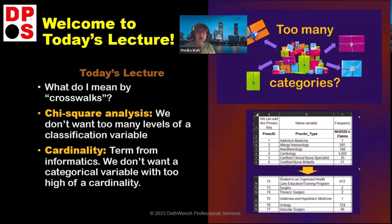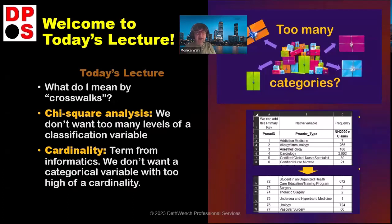I also want to introduce the term cardinality, which if you're from an informatics background you'd know, but we don't really learn it in public health. Cardinality means how many classifications or levels there are of a variable. Systolic blood pressure — like 110 mmHg — is an example of high cardinality; that's basically a continuous variable. Gender, no matter how you categorize it, is low cardinality. But health insurance or US state could be up to N equals 50 categories — that's a lot.